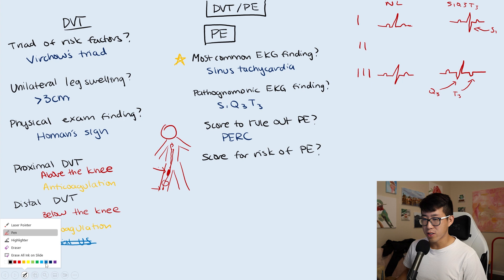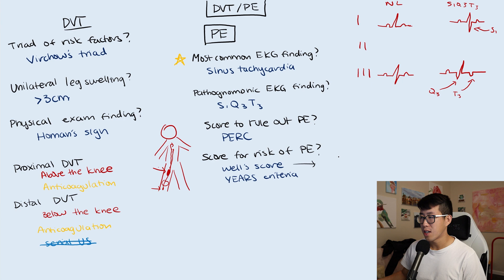If the patient does not PERC out, or is unable to be ruled out for PE based on this PERC criteria, then there's a couple of scores after that to assess the risk of DVT or PE. That would be the Wells score. You can also look into the years criteria as well.